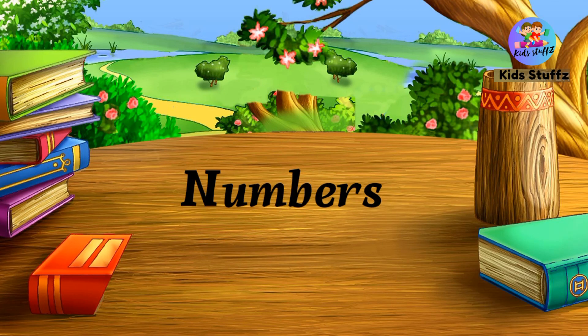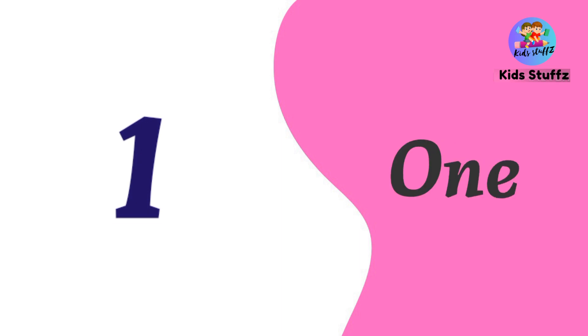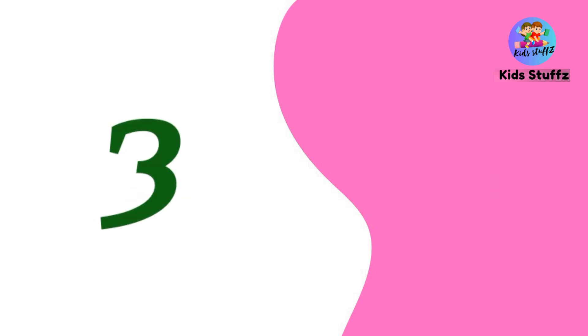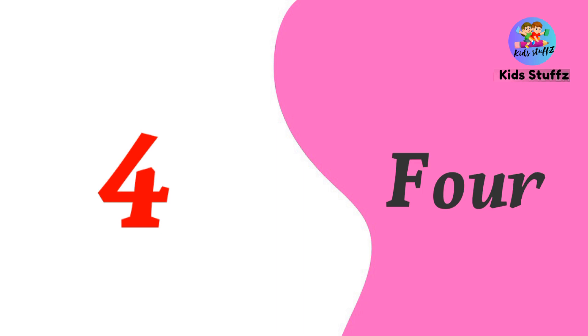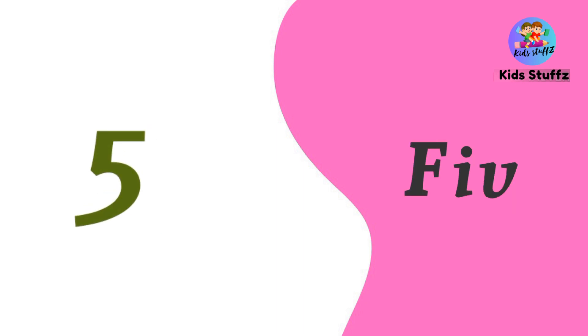Let's recall the numbers. One — O, N, E — one. Two — T, W, O — two. Three — T, H, R, E, E — three. Four — F, O, U, R — four. Five — F, I, V, E — five. Six — S, I, X — six.